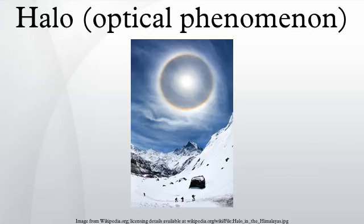Some halos are fairly common, others rare. The ice crystals responsible for halos are typically suspended in cirrus or cirrostratus clouds high in the upper troposphere, but in cold weather they can also float near the ground, in which case they are referred to as diamond dust. The particular shape and orientation of the crystals is responsible for the type of halo observed. Light is reflected and refracted by the ice crystals and may split up into colors because of dispersion. The crystals behave like prisms and mirrors, refracting and reflecting light between their faces, sending shafts of light in particular directions.